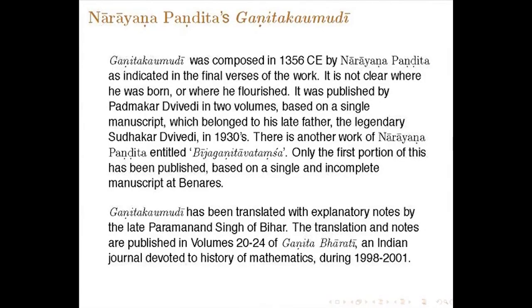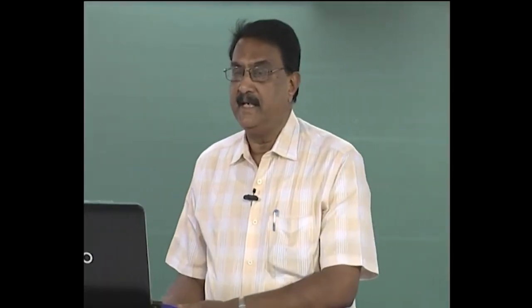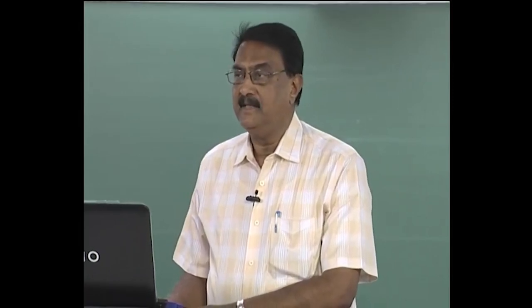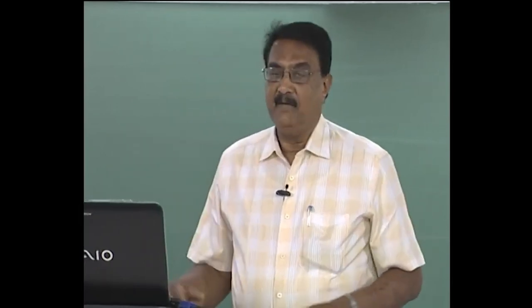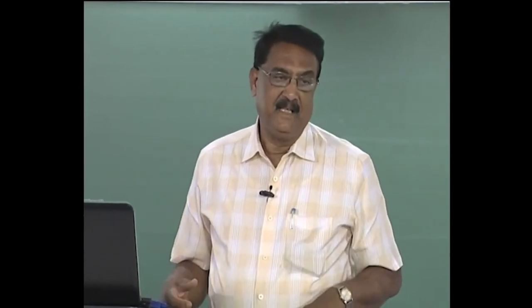Ganita Kaumudi was composed in 1356 CE by Narayana Pandita, as indicated in the final verses of the work. It is not clear where he was born or where he flourished. This work was edited and published by Padmakar Dvivedi in two volumes based on a single manuscript belonging to his late father, the legendary Sudhakar Dvivedi, in the 1930s. Sudhakar Dvivedi was a very famous person who edited and translated many important works in Indian astronomy and mathematics from the 19th century onwards, and was an important figure in the revival of interest in Indian mathematics and astronomy. Padmakar Dvivedi is his son.